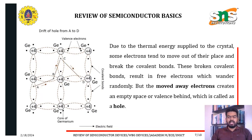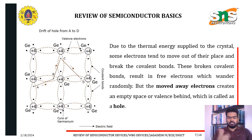Due to thermal energy supplied to the crystal, some electrons tend to move out of their place and break the covalent bond. These broken covalent bonds result in free electrons that wander randomly. When an electron moves away, it creates an empty space called a hole. This deficiency of an electron, which is a hole, is considered a positively charged particle.